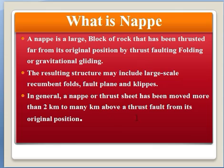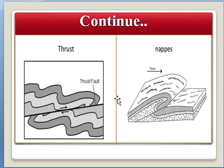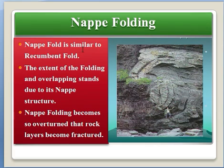In general, a nappe or thrust sheet has been moved more than two kilometers to many kilometers above a thrust fault from its original position. See the next slide for better understanding. This is a thrust fault, this is a fault line, and these are the two blocks of rock. One limb of rock moves two kilometers to many kilometers, and after overturning along this fault line, it makes a nappe structure.